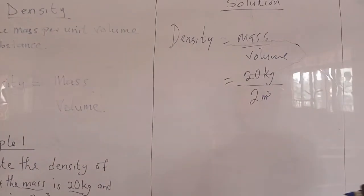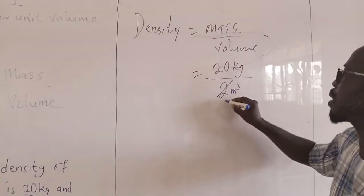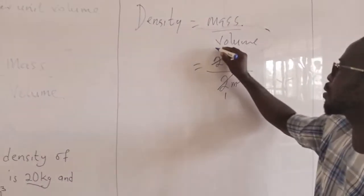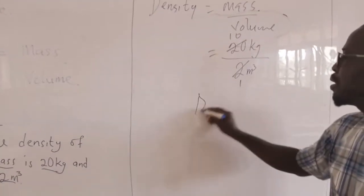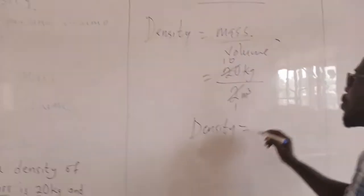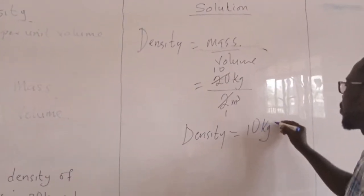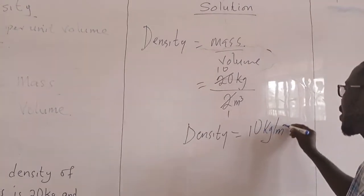So if we have this, then by simple calculation, 2 cancels. So our density equals 10 kilograms per meter cube.